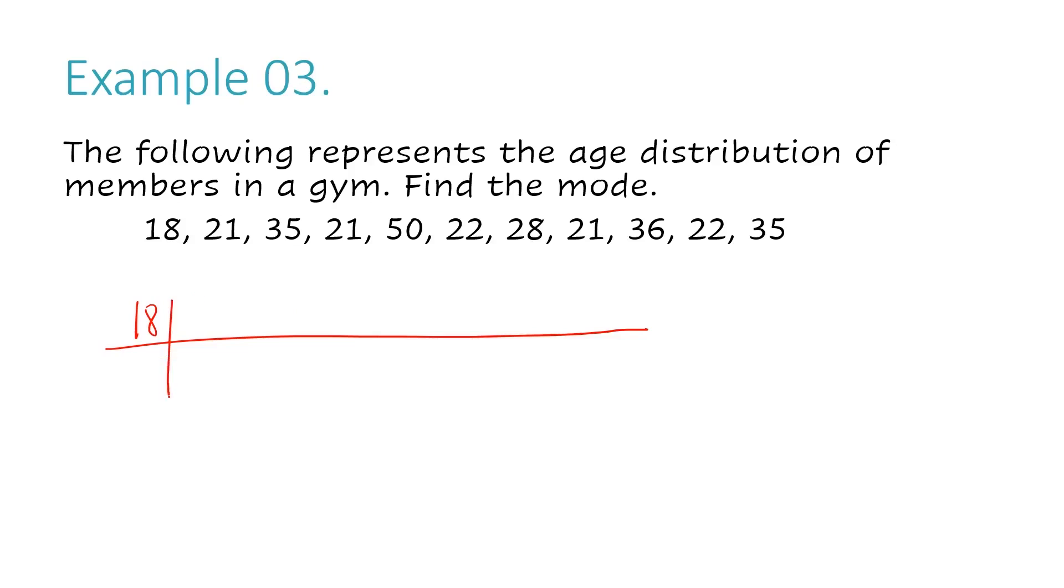I'll go in order. My first number is 18—I have one. Next is 21—I have three 21s. Then 35 appears twice. Next I have 50 once, then 22 appears twice, 28 appears once, and finally 36 appears once.